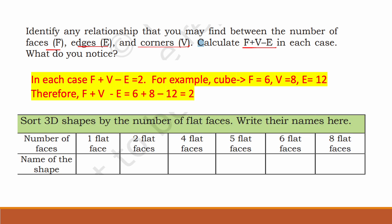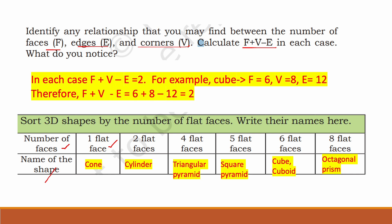Sort 3D shapes by the number of flat faces and write their names. A cone has one flat face. A cylinder has two flat faces and a curved face. A triangular pyramid has four flat faces. A square pyramid has five flat faces. A cube or cuboid has six flat faces. An octagonal prism has eight flat faces.